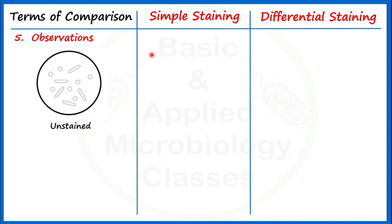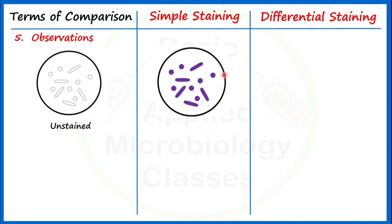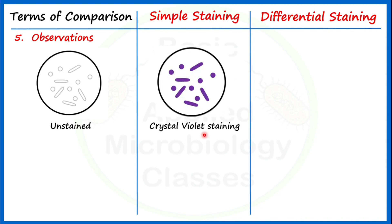After performing simple staining on this culture using crystal violet, all bacteria — whether they are of the same genera, species, or strain, or of different genera, species, or strains — will take the color of the same dye, since we are using only one dye. This type of uniform result is what we get after simple staining.